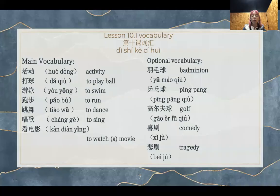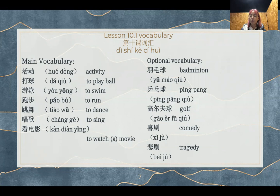Now we are going to introduce today's topic: activities. Activities is 活动。Here is some new vocabulary we will use this lesson. Please read after me. 活动，activity. 打球，to play ball. For example, 打羽毛球，打篮球。打篮球 is play basketball. 打网球，play tennis. Normally all the ball games are 球类运动。